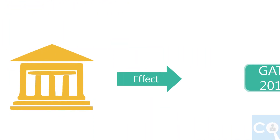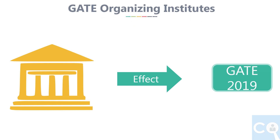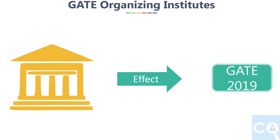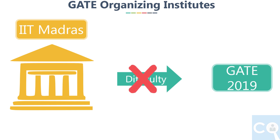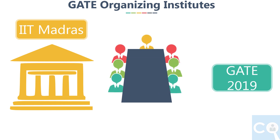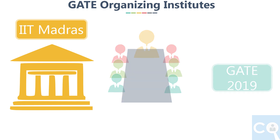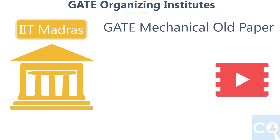As we discussed in the last video about the possible difficulty level for GATE depending on the Organizing Institute that year, we have also seen that for GATE 2019, the Organizing Institute will be IIT Madras. Although GATE difficulty level doesn't depend directly on the Organizing Institute since every IIT's professors participate in the GATE Paper Setting Committee. However, if there is the slightest chance that even a small part of it influences the GATE paper, we don't want to miss it. So in this video, we will analyze the GATE mechanical papers set by IIT Madras.